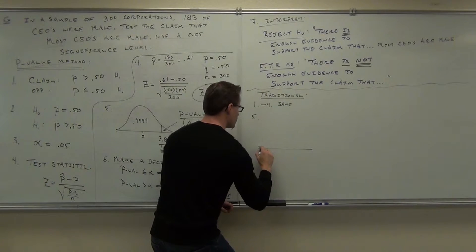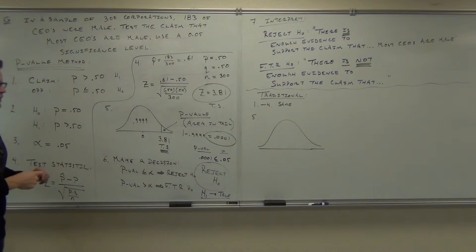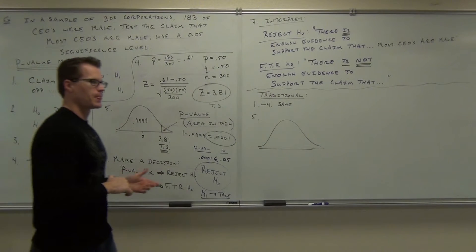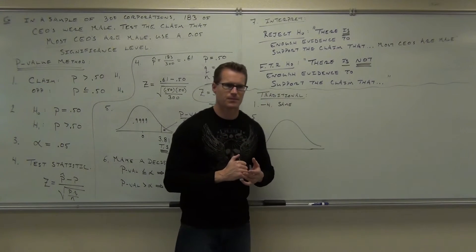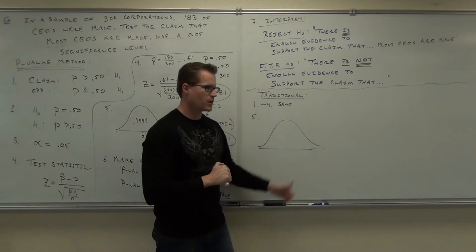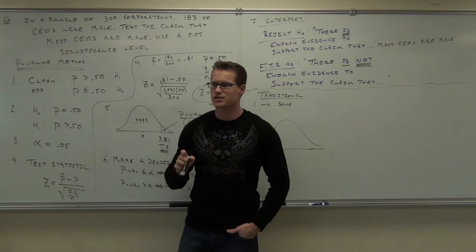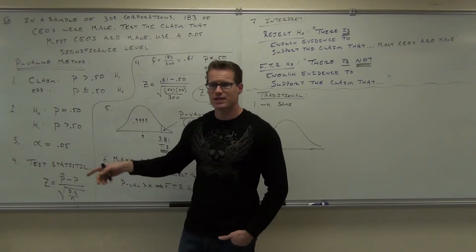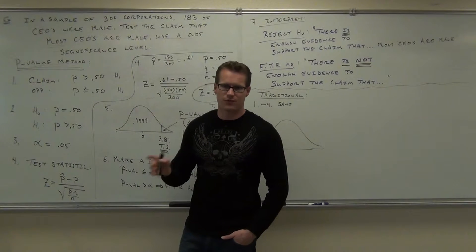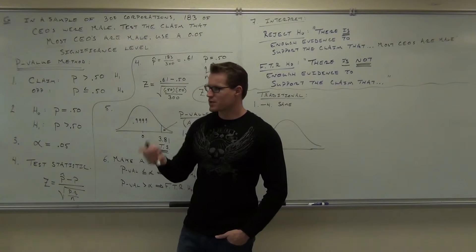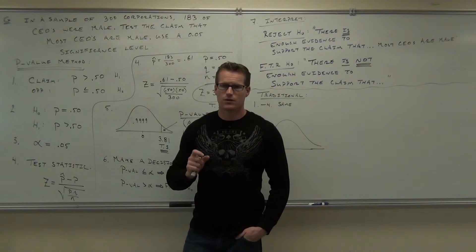Here's where it deviates — it's only one little thing. At step number five, instead of finding the P-value, instead of putting the test statistic on your graph, what you've got to do is determine whether you're a left-tail, right-tail, or two-tail test and find the critical value. Notice how we didn't even have to find a critical value for the P-value method — that's why people tend to use it.